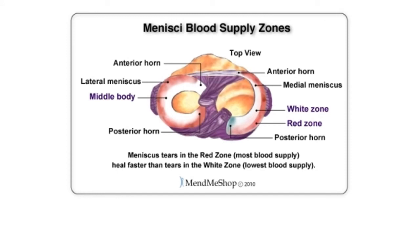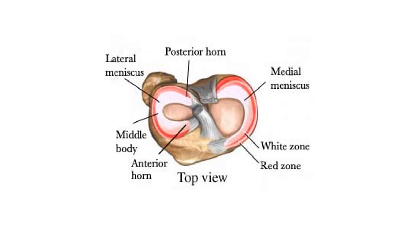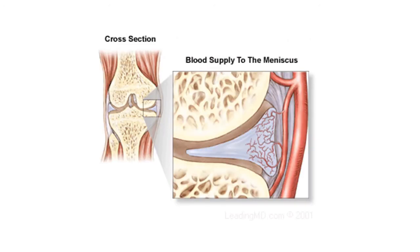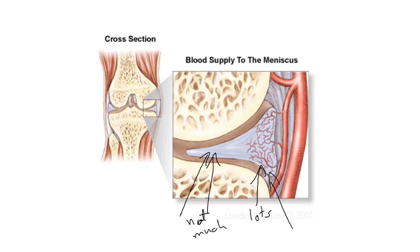Blood supply zones in the meniscus: you can see the reddish part on the outside has more blood supply, and the whitish part on the inside of the meniscus has a poor amount of blood supply. So if you get tears in the meniscus, it doesn't repair very easily on those inside portions. There's a lot of blood supply on the outer edge and not much on the inner portion.